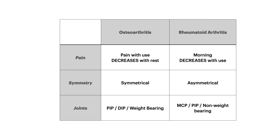Here's a table that differentiates the three key features. Understanding these differences can help you solve maybe 75% of the questions. OA: pain with use, gets better with rest. RA: morning pain, gets better with use. OA: asymmetric joint distribution. RA: symmetric. In OA, the most distal joint — the DIP — is involved, and it tends to be weight-bearing joints. RA involves the MCP in the hand and tends to involve non-weight-bearing joints elsewhere.